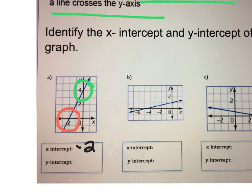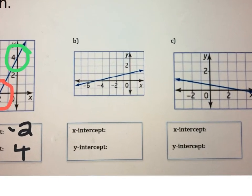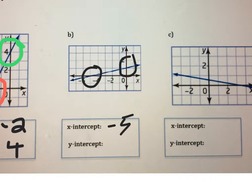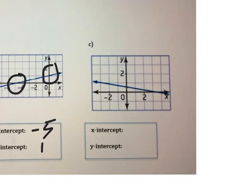So the x-intercept is negative 2 and the y-intercept is 4. Let's look at Graph B — the x-intercept looks like the line is hitting at negative 5, and the y-intercept is where the line is hitting at 1.